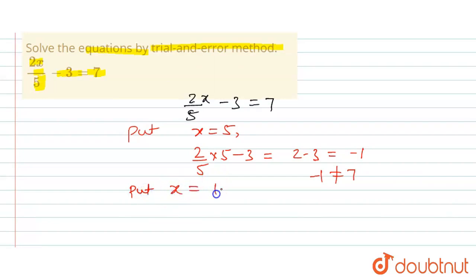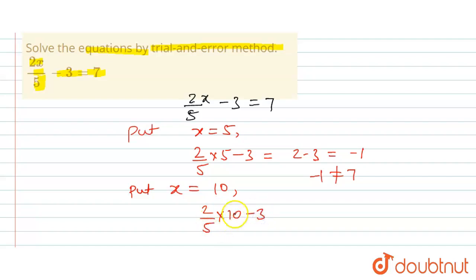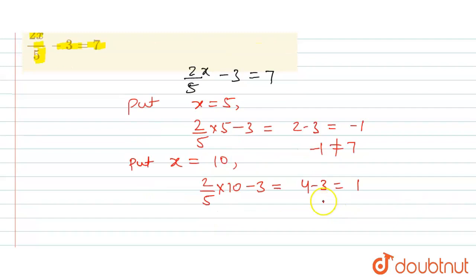Now we will put x equal to ten — the next multiple of five. Two upon five into ten, minus three — five cancels with ten to give two — so two into two is four, minus three equals one. One is not equal to seven, so this is also not a solution.